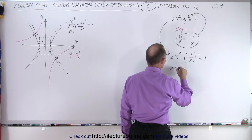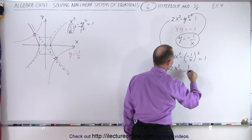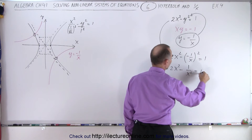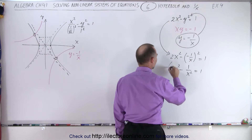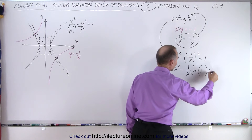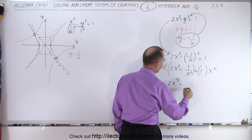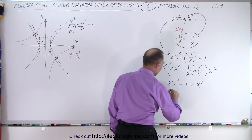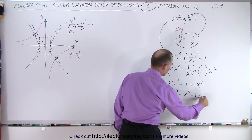Squaring this, we get 2x squared minus — and this becomes a positive 1 over x squared, because we square the numerator and we square the denominator — and that equals 1. Now to get rid of that x squared in the denominator, we multiply the left and the right side by x squared. So we end up with 2x to the fourth minus — the x squared cancels out — 1 is equal to x squared. Moving everything to one side, we end up with 2x to the fourth minus x squared minus 1 equals 0.